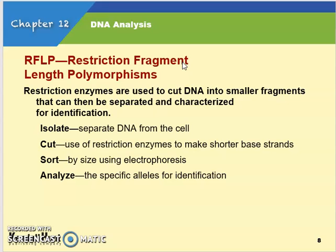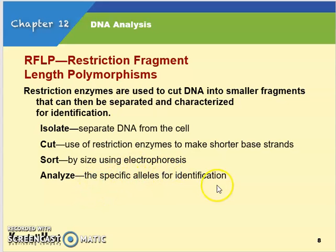RFLP stands for Restriction Fragment Length Polymorphisms. This uses restriction enzymes to cut DNA into small fragments, and those fragments can then be separated, characterized, and identified. The four steps are: isolate — separating the DNA from the cell via extraction; cut — using restriction enzymes to make short base strands; sort — using gel electrophoresis; and analyze — looking at specific alleles and using them for identification.